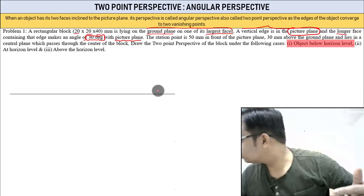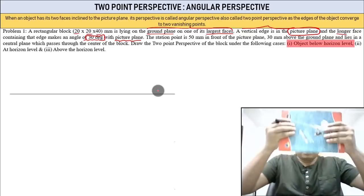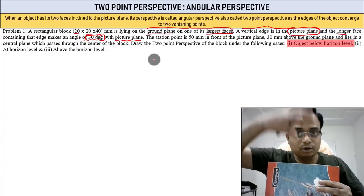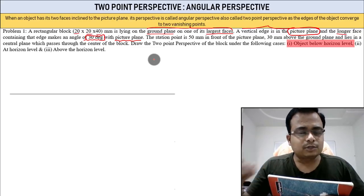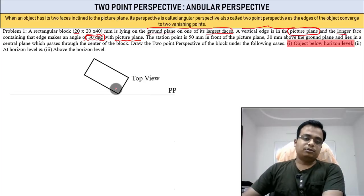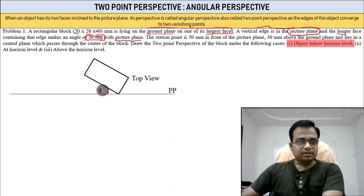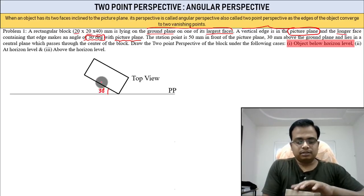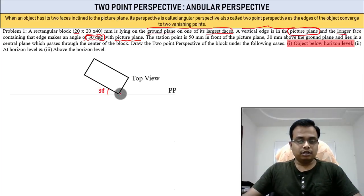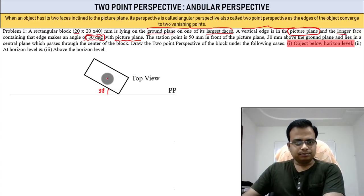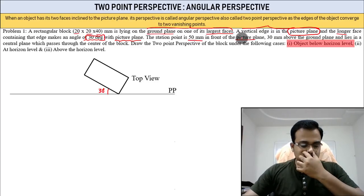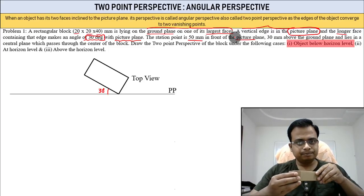So from the top, the picture plane appears as a line. The object is positioned at 30 degrees to the picture plane — that is the top view. You can mark all eight corners: four at the top and four at the bottom. Now let's read further — the station point is 50 mm in front of the picture plane.